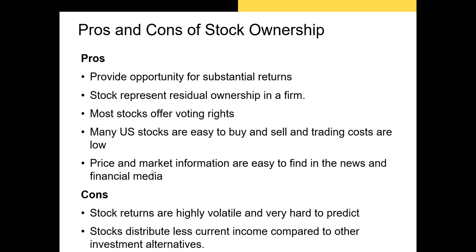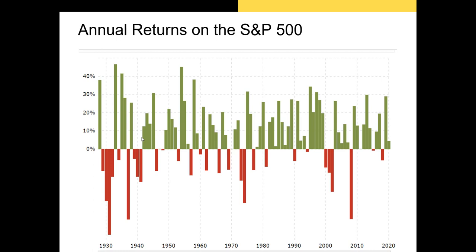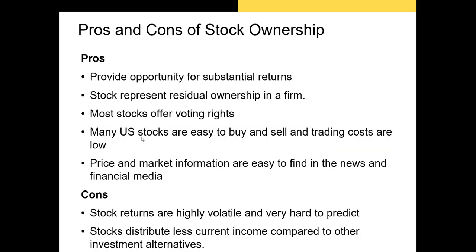Now there are two big drawbacks to stock ownership. The primary drawback is the volatility of stock returns. The S&P 500 has lower volatility than most individual stocks in the index, and even our best return prediction models for single stocks are poor over short time periods — part of the reason we want to diversify our portfolio. The other big drawback is that stocks distribute less current income compared to other investments. If you're a pensioner living off portfolio income, it would be foolish to invest most of your portfolio in US stocks since most don't pay a dividend.